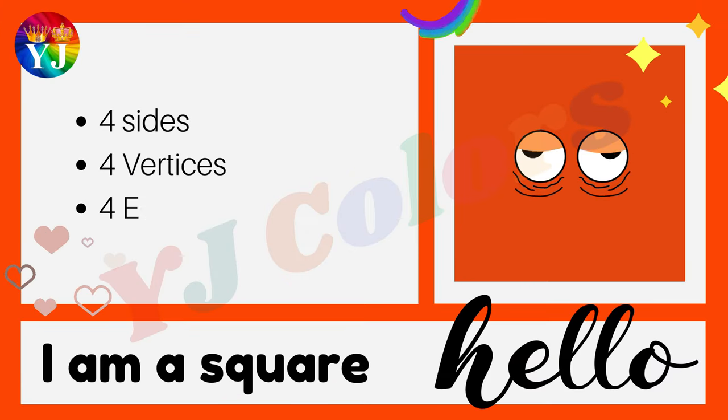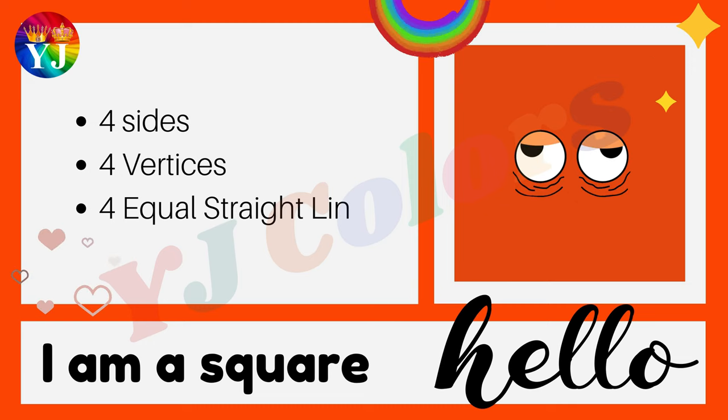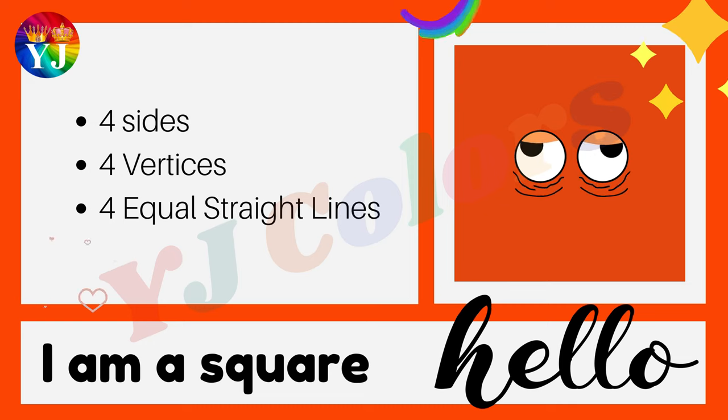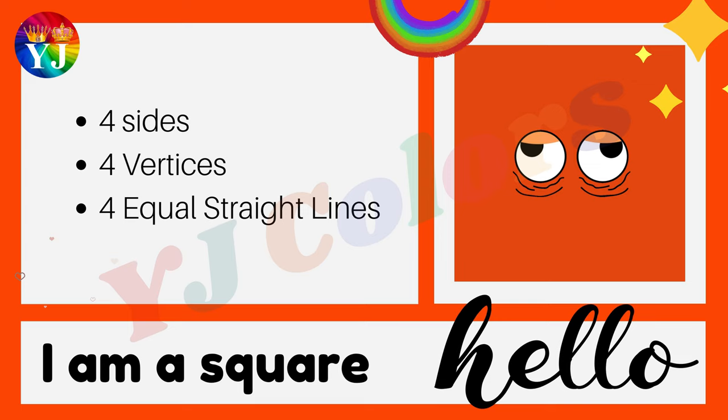Hello, I am a square. I have four sides, four vertices and four equal straight lines.